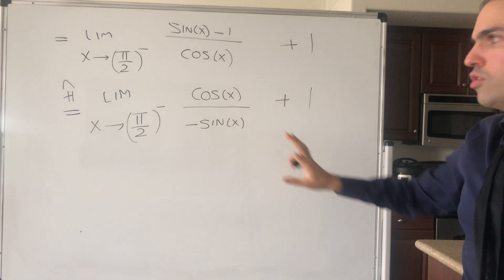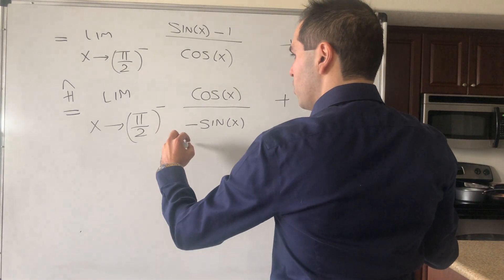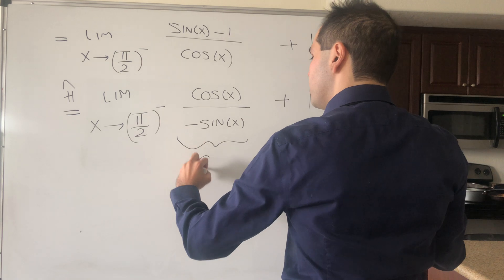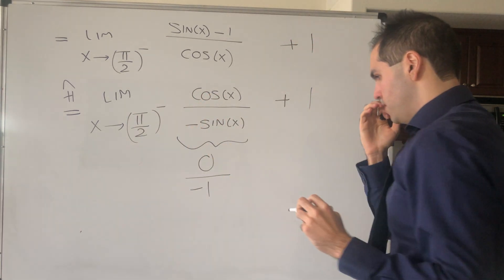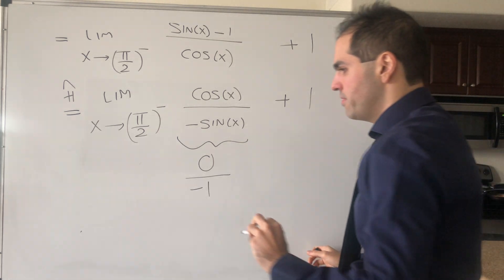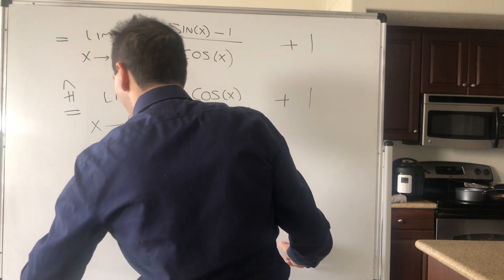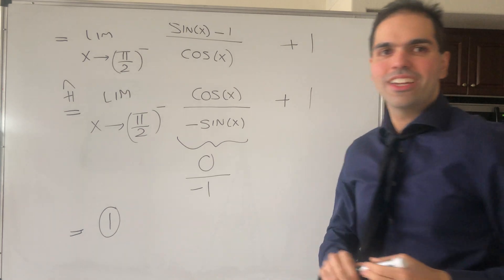But then the rest of this is not too bad because you see cosine of pi over 2, that is 0, and then sine of pi over 2 is 1. So it's just 0 minus 1, which does become 0. So in the end, after all of hard work, we get 1.